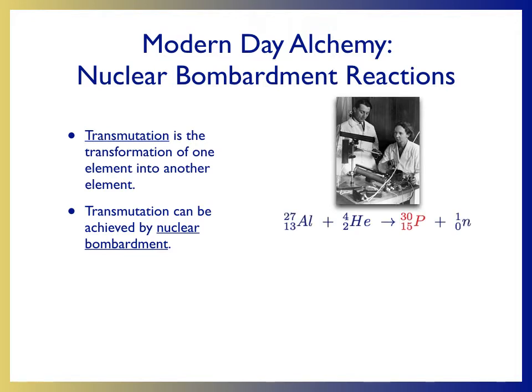The first such nuclear bombardment reaction was done in 1935 by the Joliot-Curie family. This is Irene Curie and Frederick Joliot, who were the daughter and son-in-law of Marie Curie. In this first reaction, they bombarded aluminum-27 with alpha particles, or helium-4 nuclei, to produce phosphorus-30 and a neutron.